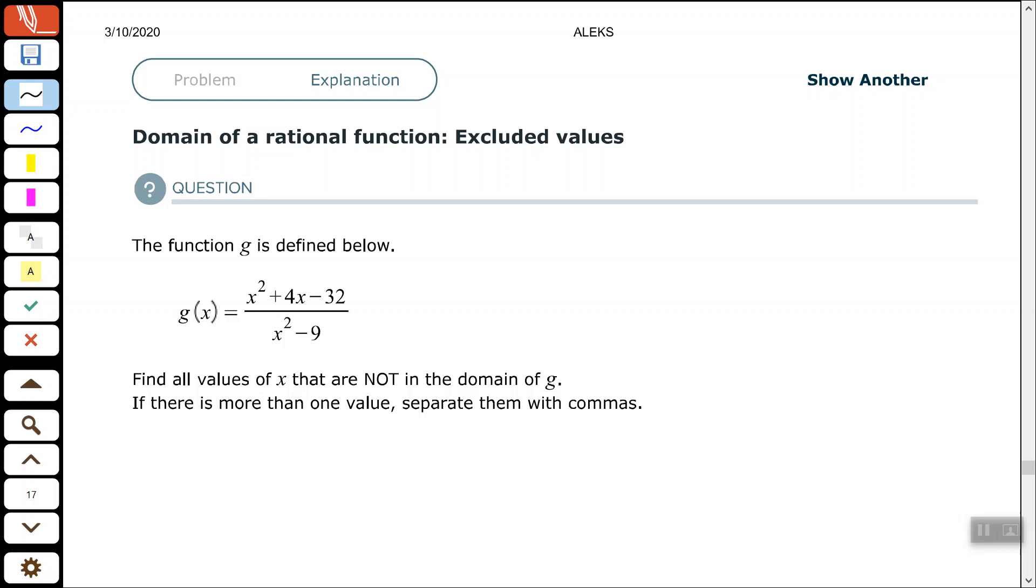So it says the function G is defined below: G of X equals X squared plus 4X minus 32 over X squared minus 9. We're not simplifying anything. We want to find all the values of X that are not in our domain of G.